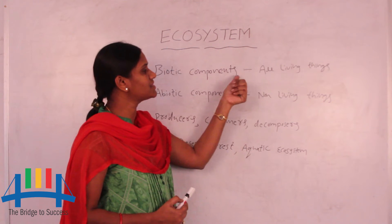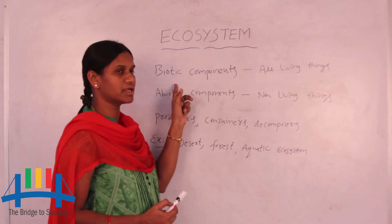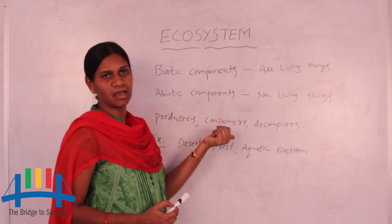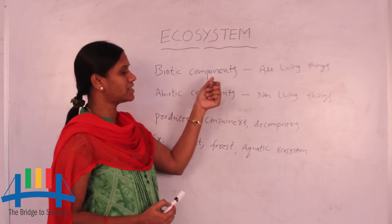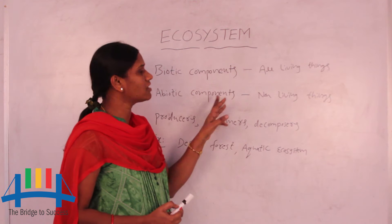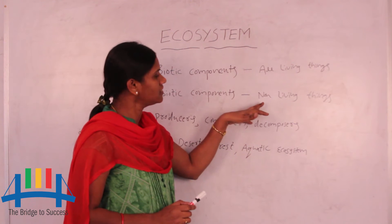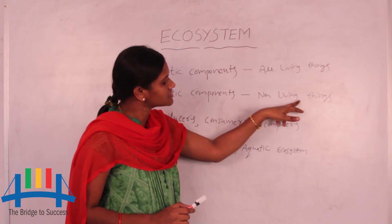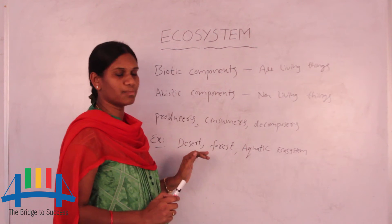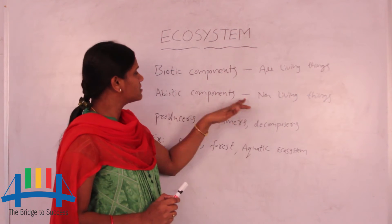Biotic components means all living things are called biotic components — maybe plants or maybe animals. Then abiotic components — all non-living things are called abiotic components. Examples are soil, water, and air.